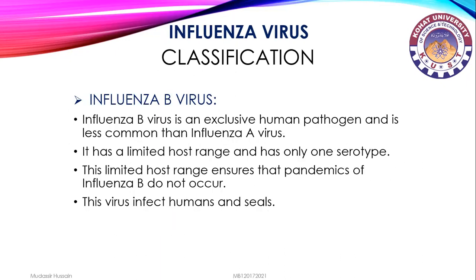Influenza B virus is an exclusively human pathogen and is less common than influenza A virus. It has a limited host range and has only one serotype. This limited host range ensures that pandemics of influenza B do not occur. This virus infects humans and seals.